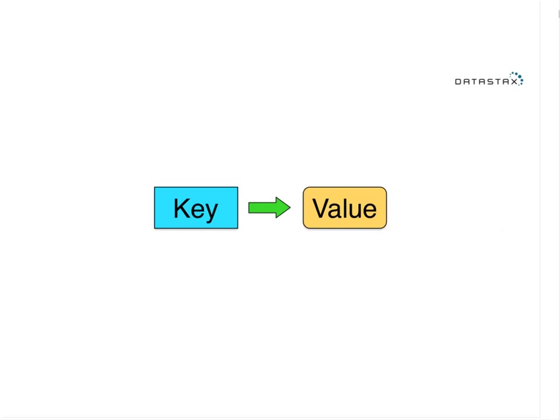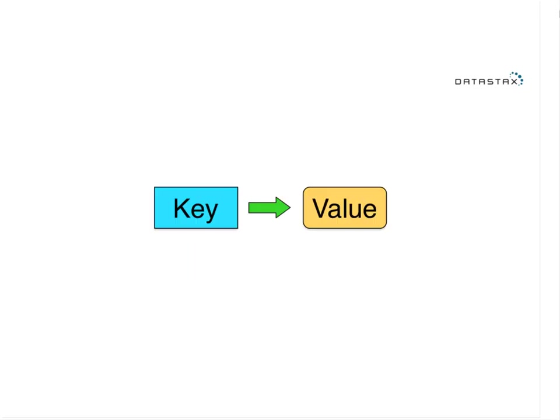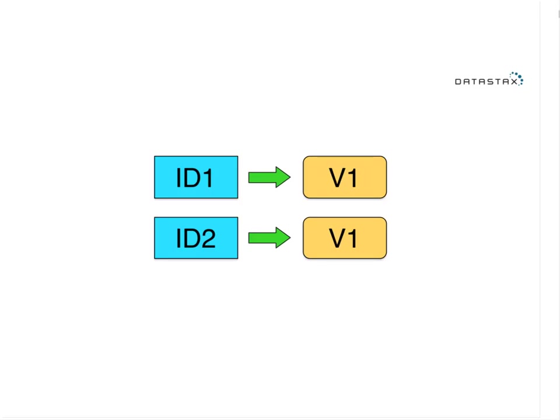I take the key for my primary value, run it through the hash function, and that determines which node it gets placed on. In the simplest sense, Cassandra is a key-value store — the key maps to a value which may be a row or an individual value. To do a lookup, I hash the key value and that returns the node where I'll find the value.